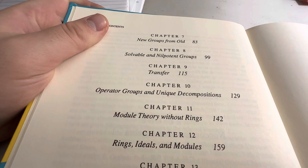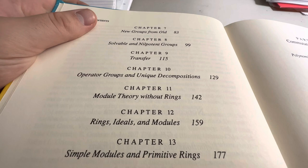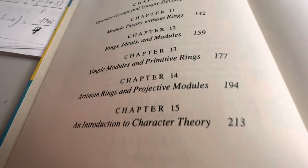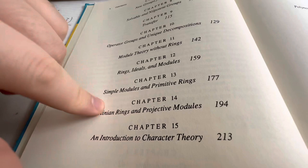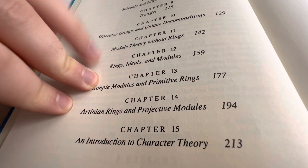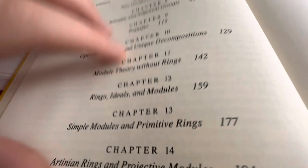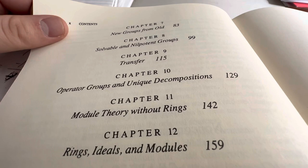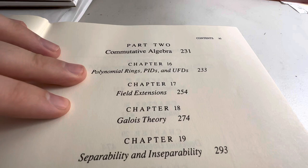New groups from old, nilpotent groups, solvable groups. We skipped some of this, though. We skipped—how much of this did we skip? We did not do character theory. I want to say we did some Artinian rings. We did primitive rings. We did rings. I think we skipped chapter 11. Maybe. I think we skipped transfer and operator groups. I don't recognize those subjects. And then we definitely did chapter 16. We definitely did 17. We definitely did 18. 19.